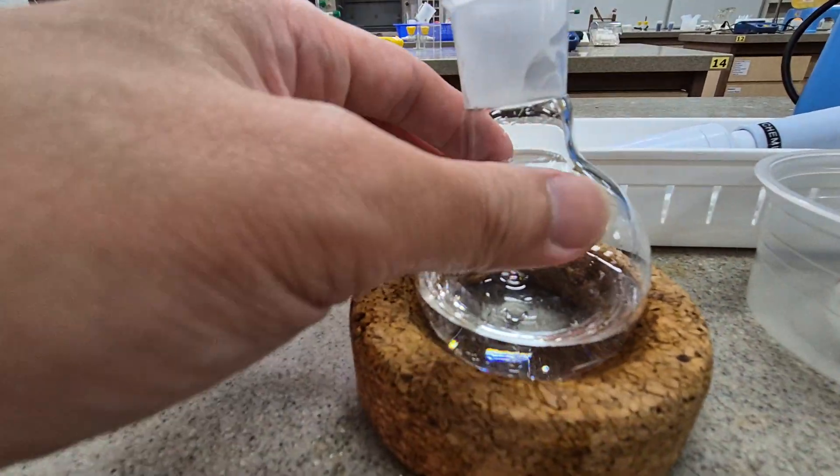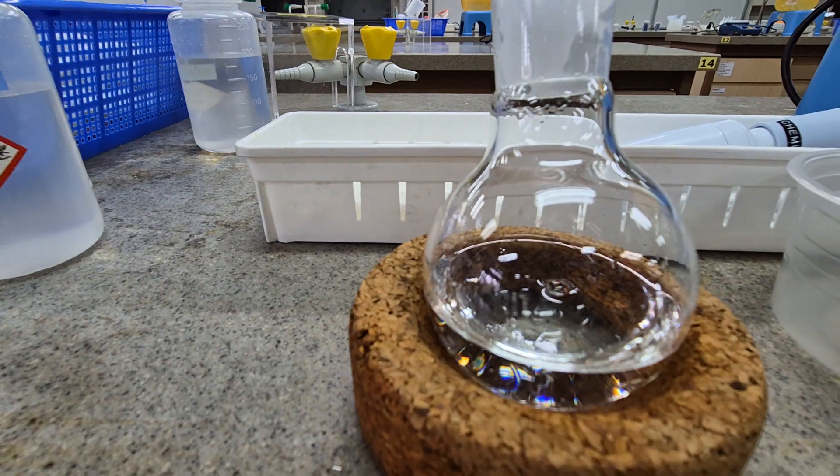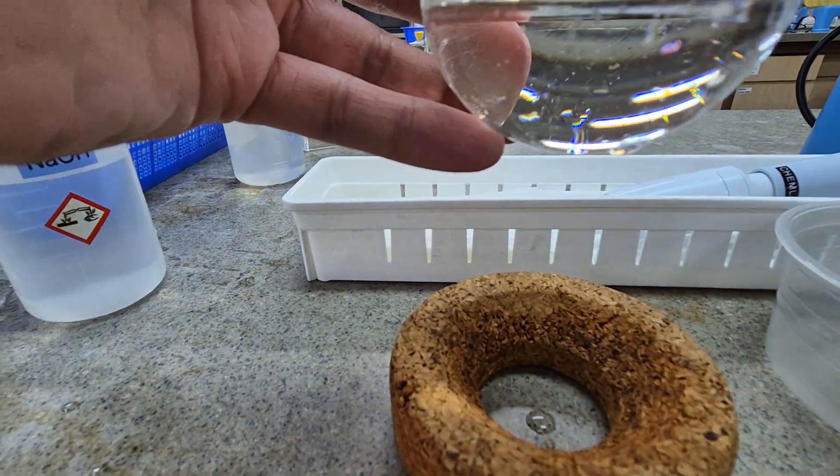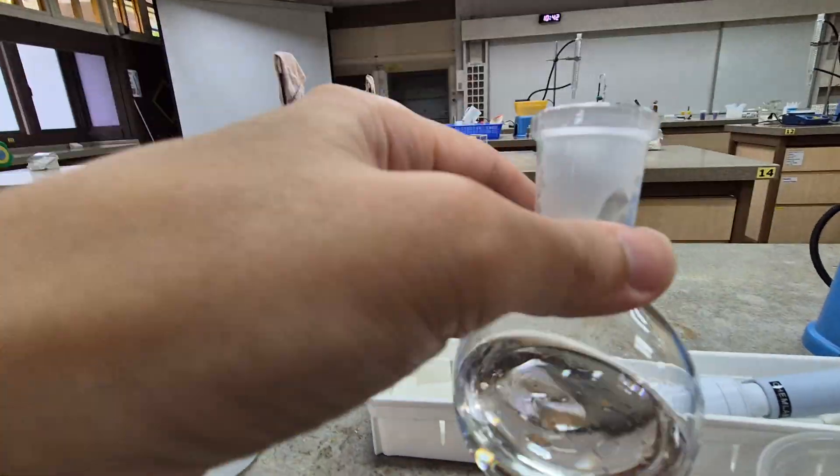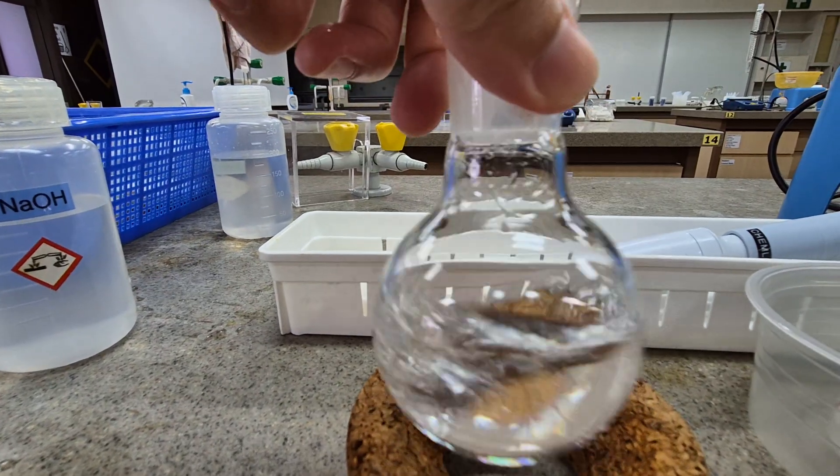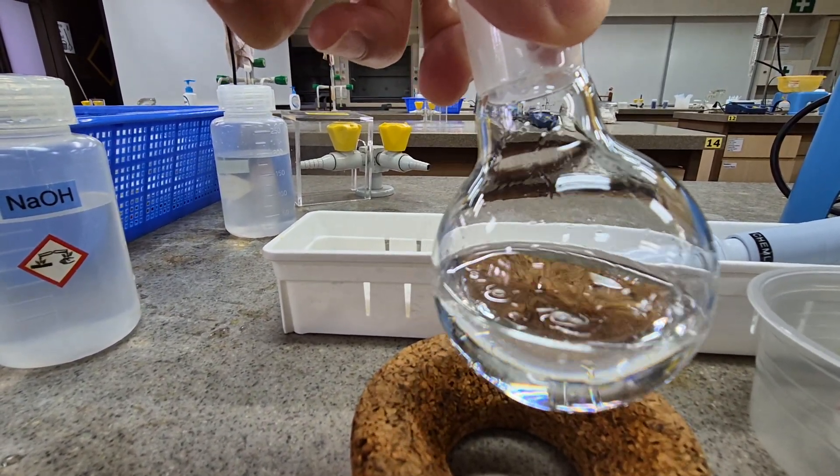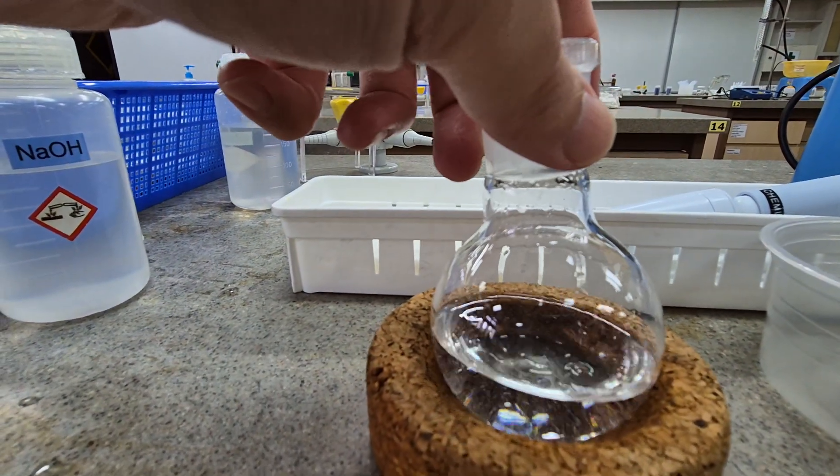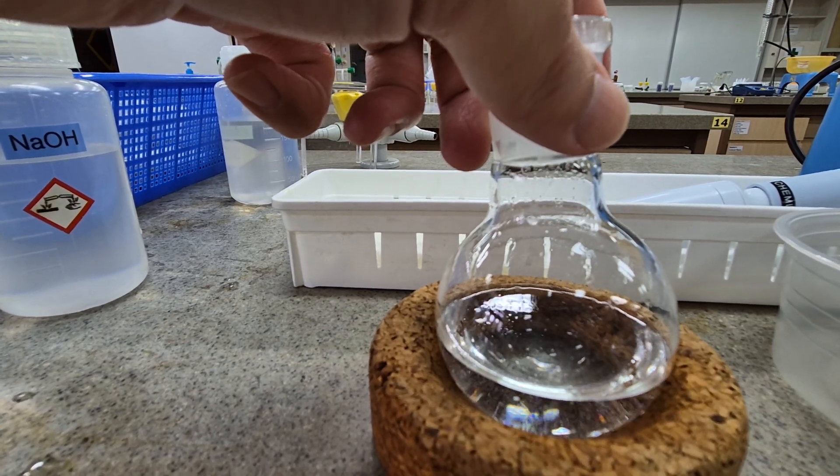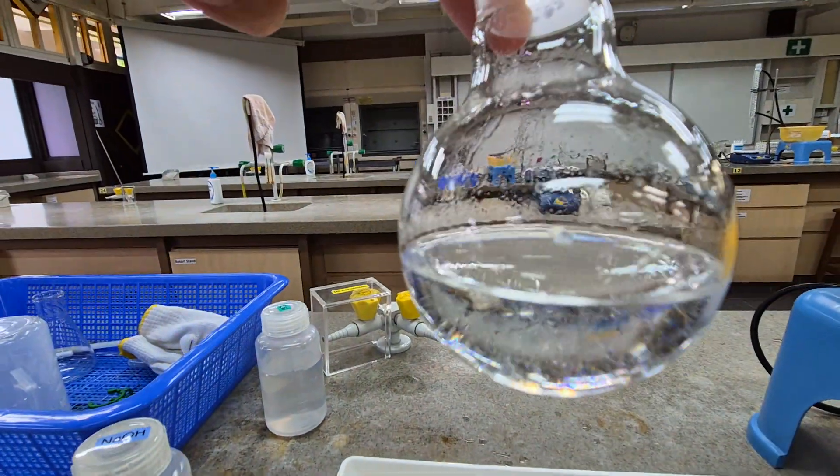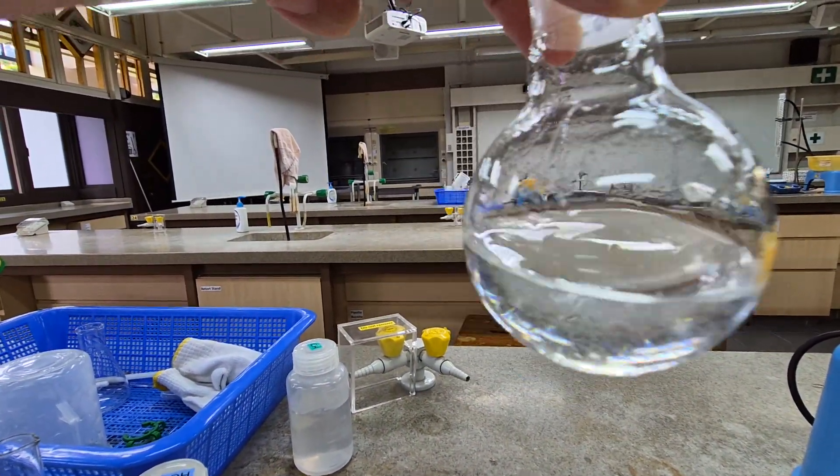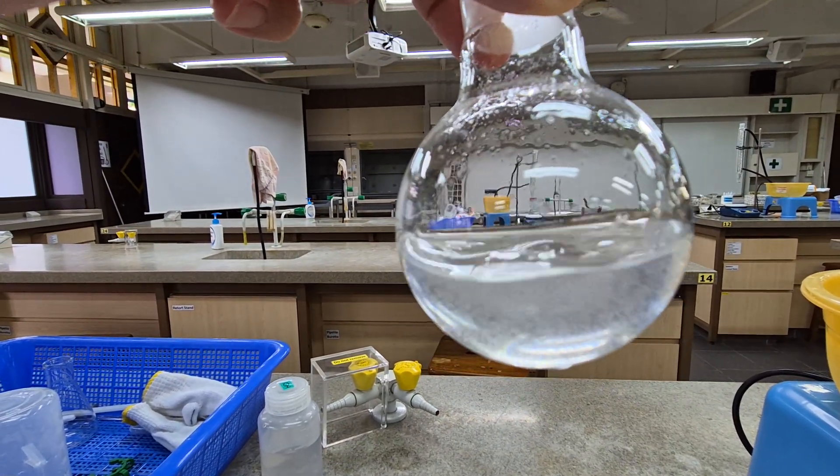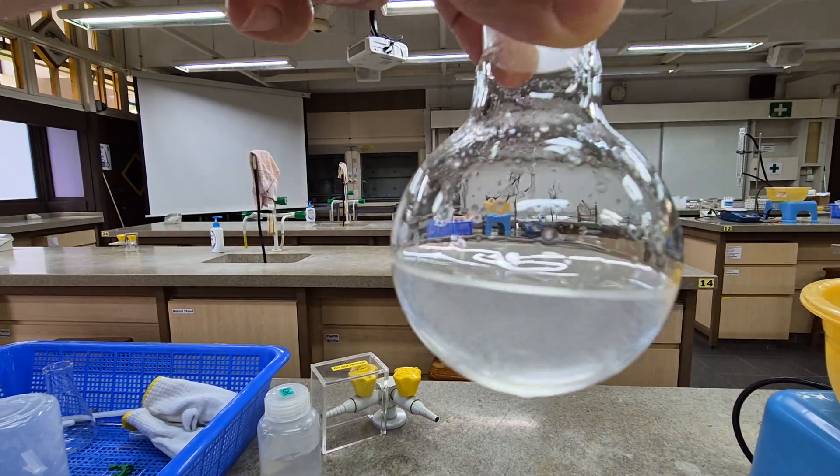You observe that the white precipitate slowly appears, bit by bit. It's getting more and more cloudy. It might be a good time for you to ask yourself why is this the case, why does white precipitate start to appear. I think it's quite obvious.